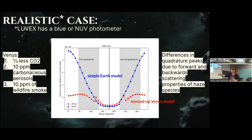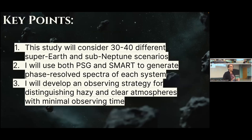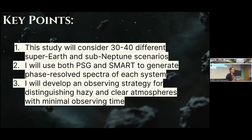In the optimistic case, those blue and yellow spikes represent the increases in flux when you've introduced the hazes. Not only can we compare this to a simple Earth model and say this is much bigger with weird behavior peaking not exactly at secondary eclipse, but these peaks are asymmetric — meaning we're dealing with something that has a really interesting scattering function. As a takeaway for this project, this study is going to consider about 30 or 40 different super-Earths and sub-Neptunes with different hazes and surfaces, using Planetary Spectrum Generator and SMART to generate spectra for each. I'll use all this to develop an observing strategy to distinguish between hazy and clear atmospheres while minimizing observing time.